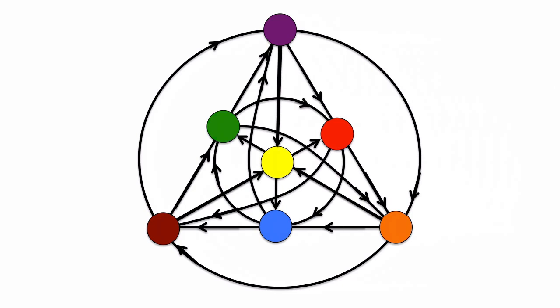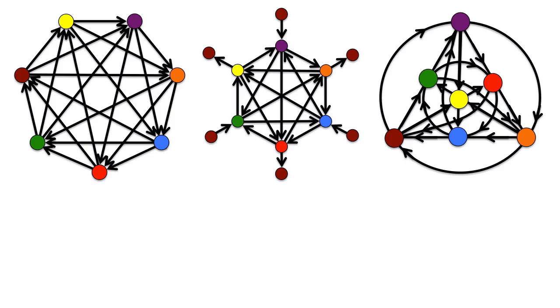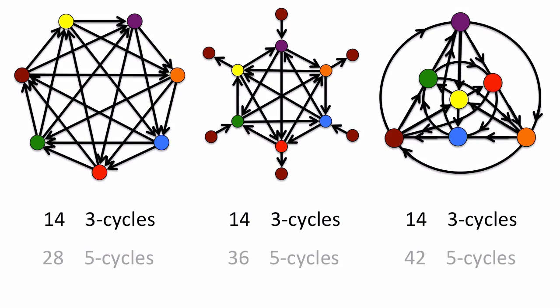Like in the five-weapon case, we ask if these graphs are equivalent if we switch the labels. Each of these graphs has exactly 14 three cycles, but the number of five cycles varies. Since these cycles are structural and would not change with relabeling, these graphs must be fundamentally different from each other.